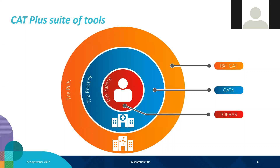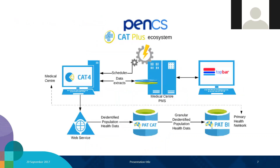Cat 4 is a clinical audit tool — it works over a data extract. TopBar is a decision support tool that works at the point of care when your clinicians, doctors, nurses or receptionists deal with patients. TopBar prompts for missing information or shows if a patient is eligible for certain MBS item numbers. Cat 4 is the audit tool which works off a data extract, while TopBar works in real time, connecting to clinical software to prompt with valuable information.